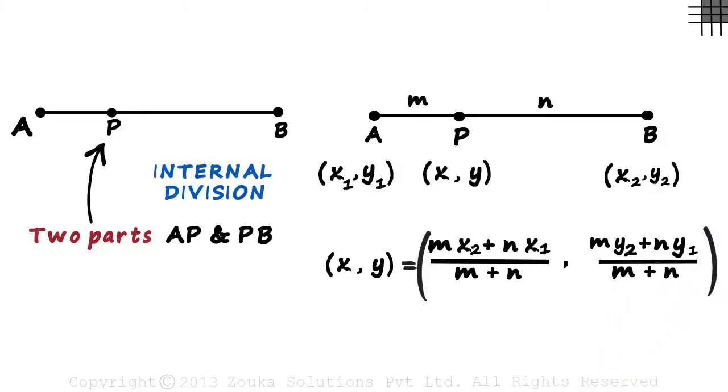We go cross out here, this multiplied by this plus this multiplied by this divided by the sum of M and N. This is called the section formula for internal division.